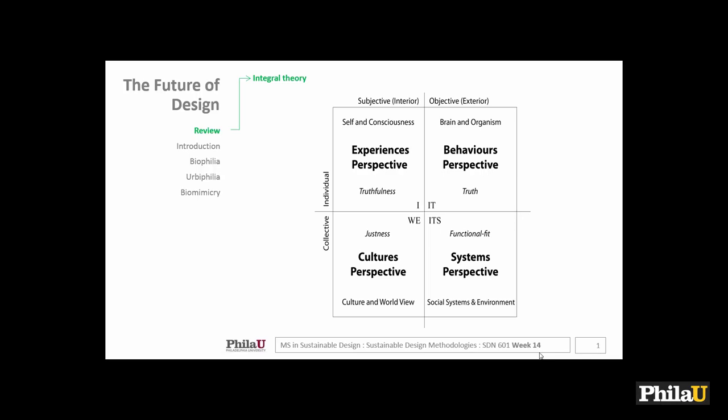As a review, we want to talk about integral theory and holistic thinking — learning how to have four lenses simultaneously. When we walk down the street, we're looking at the world through four lenses instead of one. Most of us use one — we think like engineers, like architects. The 21st century person can think in multiple perspectives simultaneously, and sustainability is really about looking at subjective and objective points of view simultaneously.